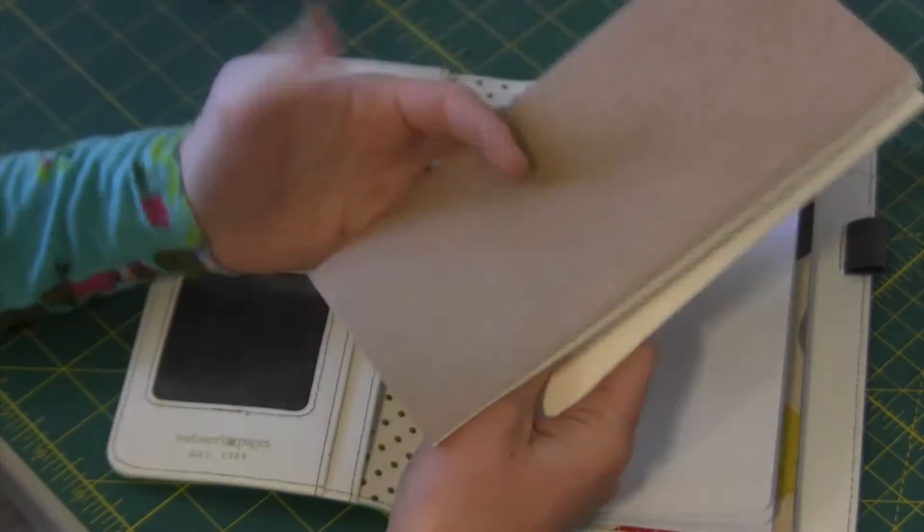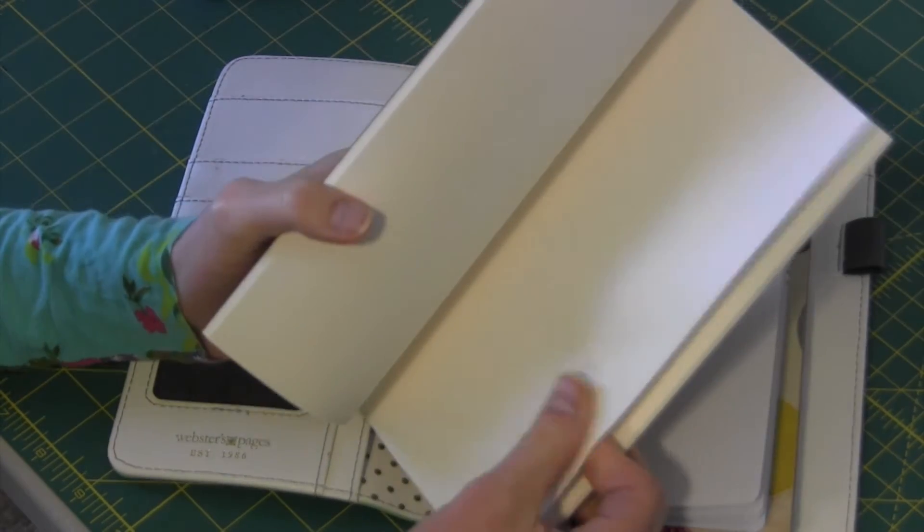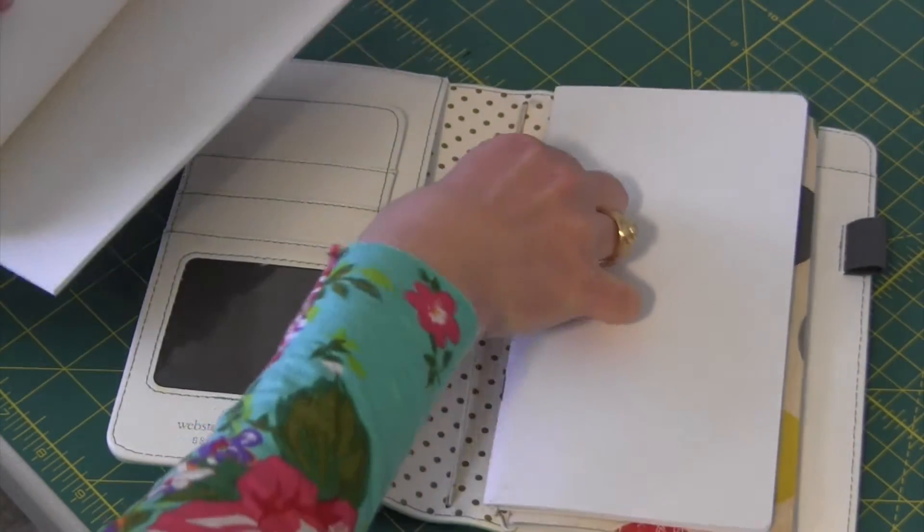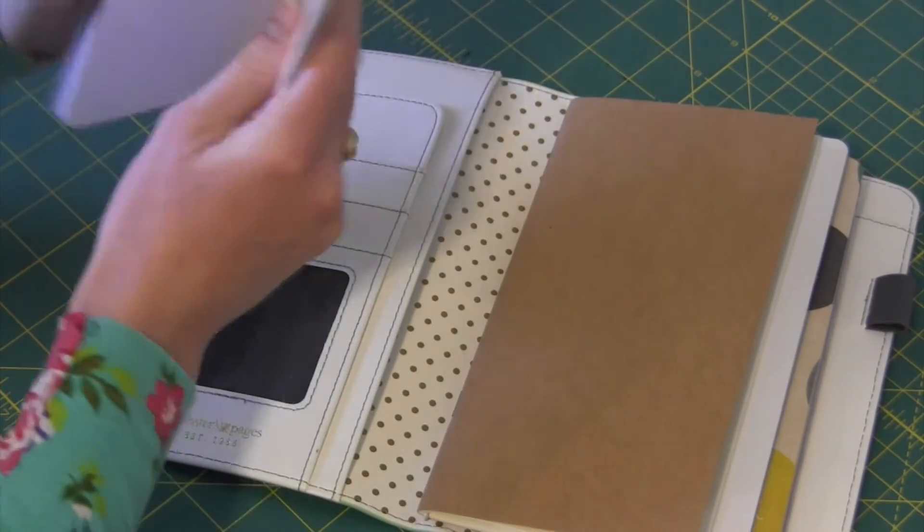I'm going to take this one. This is a Webster's Pages notebook. This is kind of like a thin craft paper. I do use this kind of book in my planner right now. I'm going to open that to the middle, stick it in there like that and then this one.